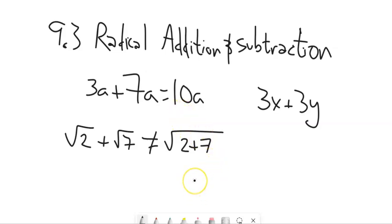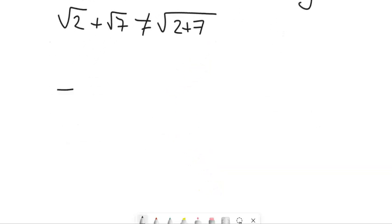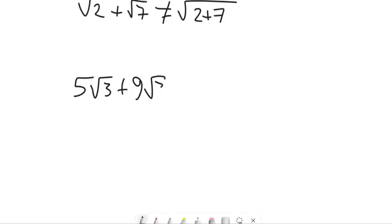So for example, if I had 5√3 plus 9√3, I have like terms. These are √3's. So I have 5 of them plus 9 of them. I could say, well, that's 14 of them. 14√3.